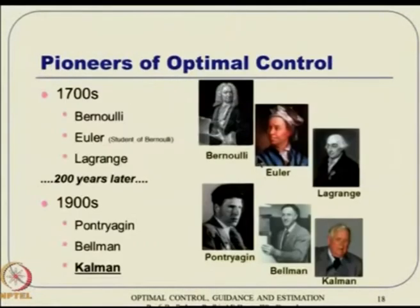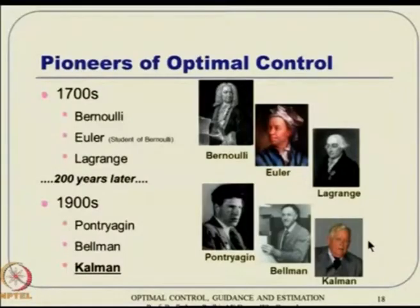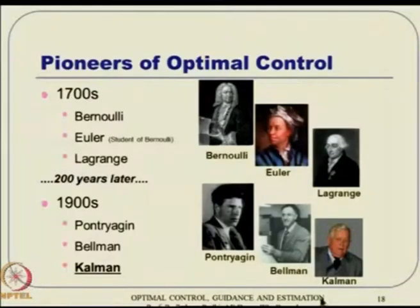If you revisit the pioneers of optimal control historically, Bernoulli, Euler, and Lagrange come in the 1700s, but 200 years later the giants are Pontryagin, Bellman, and Kalman. Kalman has done a lot of work in linear systems theory, especially LQ design of control — LQR theory, essentially linear quadratic design — and various ideas associated with that using controllability, observability, and related concepts. He has proposed many things, but he is fundamentally known for Kalman filtering.